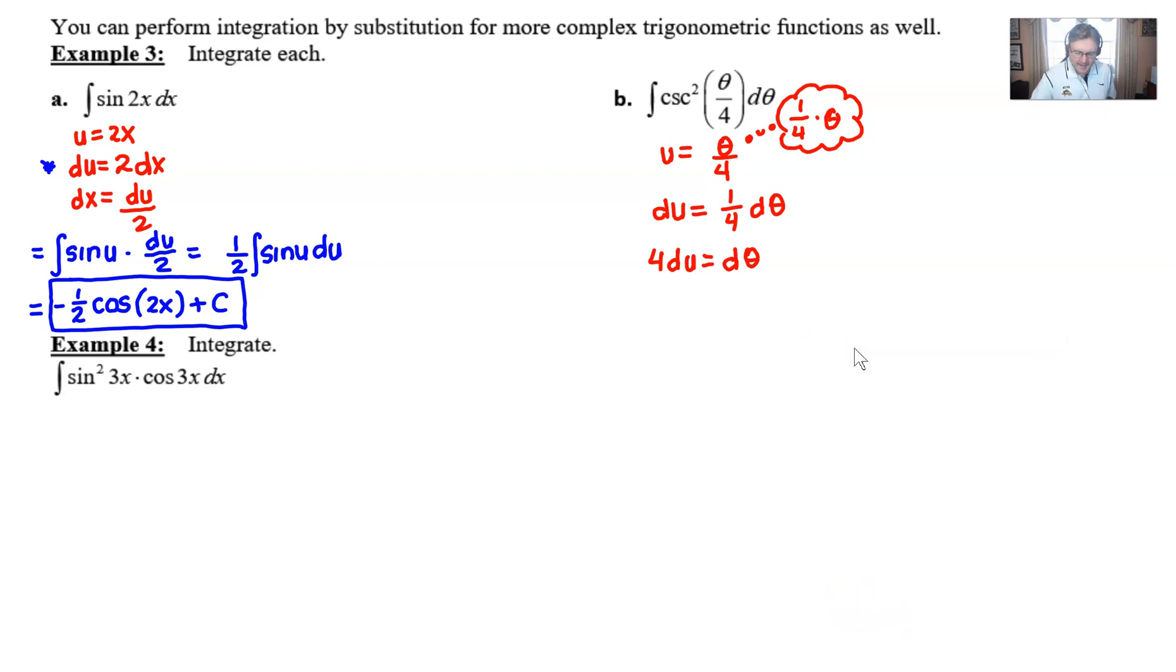We're going to rewrite this integration. We'll write it in blue here, and we have 4 that we know is going to come out in front, and then this cosecant squared is going to act upon u with respect to u.